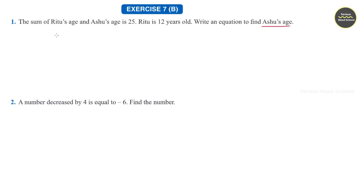First we can write, let Ashur's age be H years. Then, Ridhu's age is given, Ridhu's age is 12. And sum of Ashur's and Ridhu's age is 25. Therefore, according to the question, we can write H plus 12 is equal to 25.